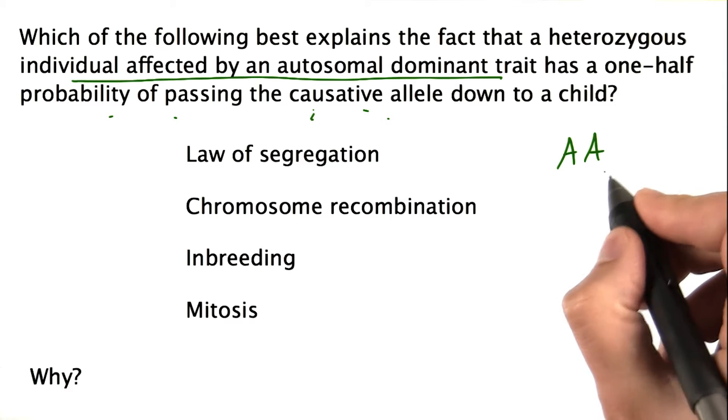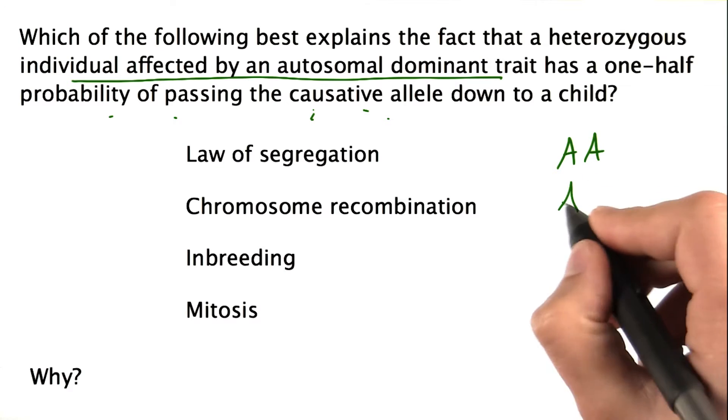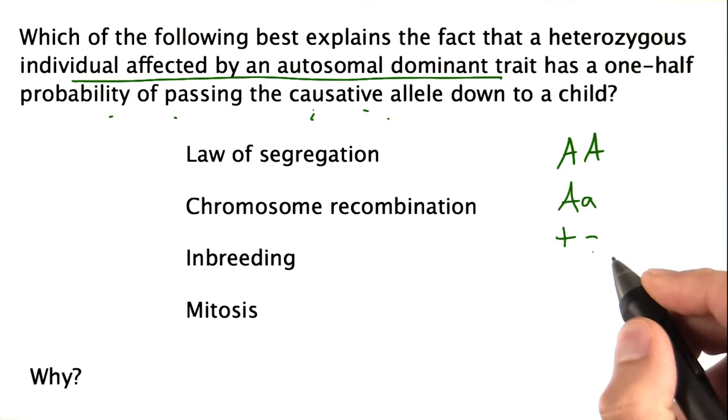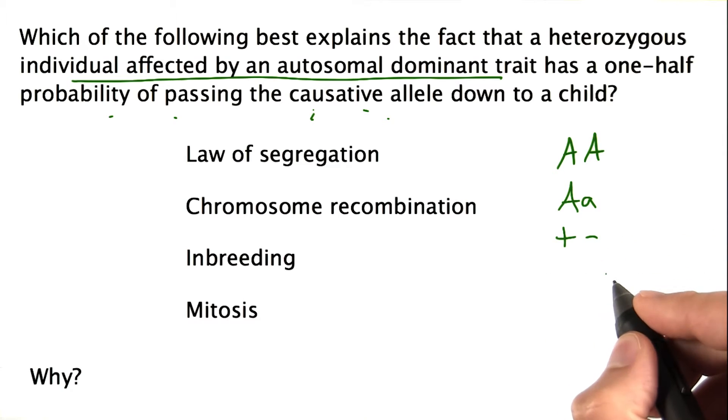So if you have two copies of a gene, big A and big A, or if you're going to be heterozygous, big A and little a, or A plus and A minus, you have an equal probability of passing one down versus the other.